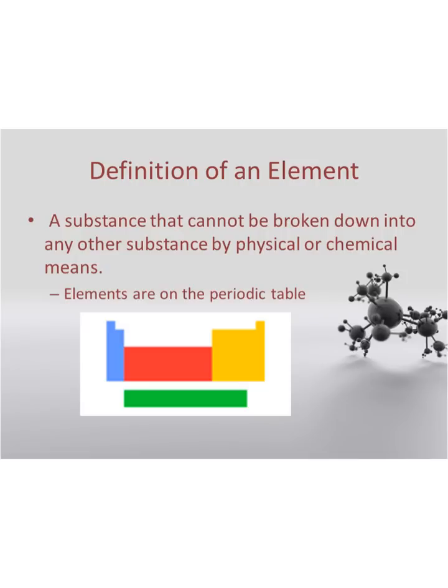Just to remind you about the definition of an element: it's a substance that we can't break down into other substances by physical means — like chopping it in half — or chemical means, like putting it through a chemical reaction. An element is a type of atom, so a hydrogen element is a certain type of atom, and it's different from a helium atom because it has a different arrangement of protons and neutrons. Elements are found on the periodic table, and in a few weeks we're going to learn a lot more about how to read it.